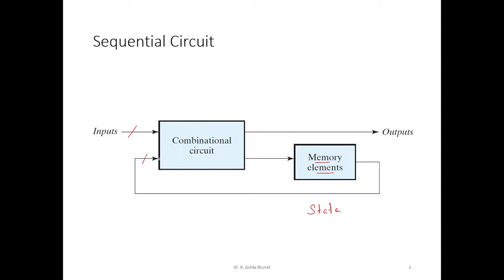Some of the outputs are directly given and some outputs affect the memory elements. The output from the combinational circuit to the memory elements determines what should be done to the memory elements - whether the information has to be retained or new information has to be written.